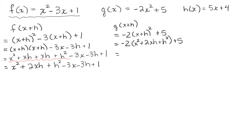We need to distribute negative 2: negative 2 times X squared is negative 2X squared, negative 2 times 2XH is negative 4XH, and negative 2 times H squared is negative 2H squared, plus 5. There are no like terms, so that is G of X plus H.